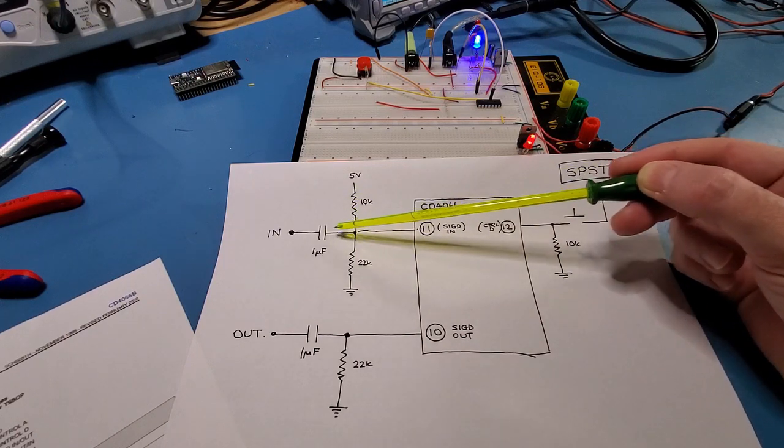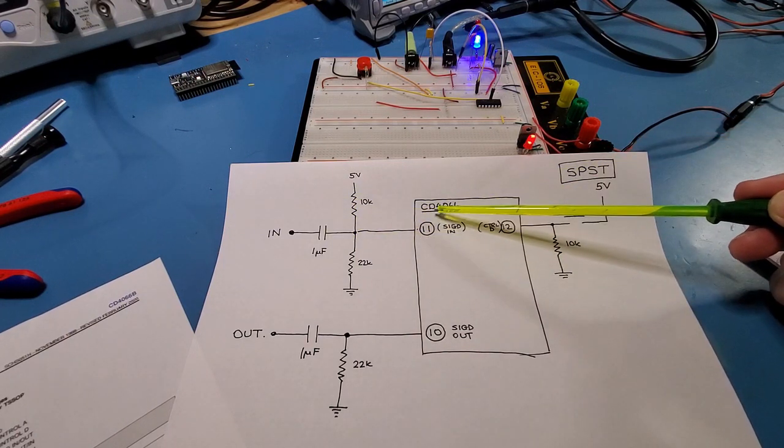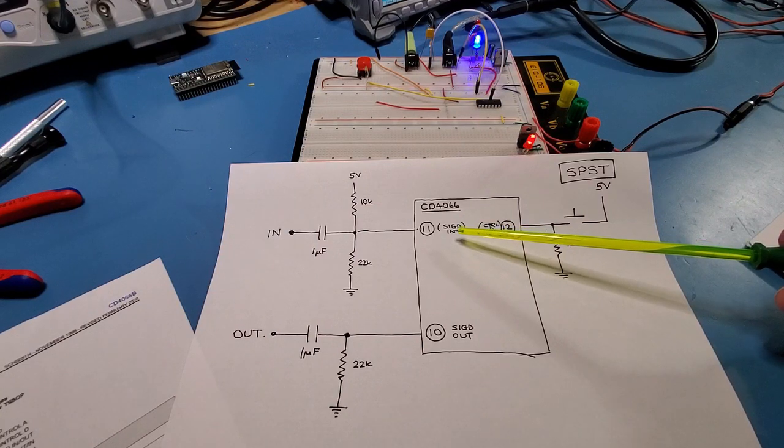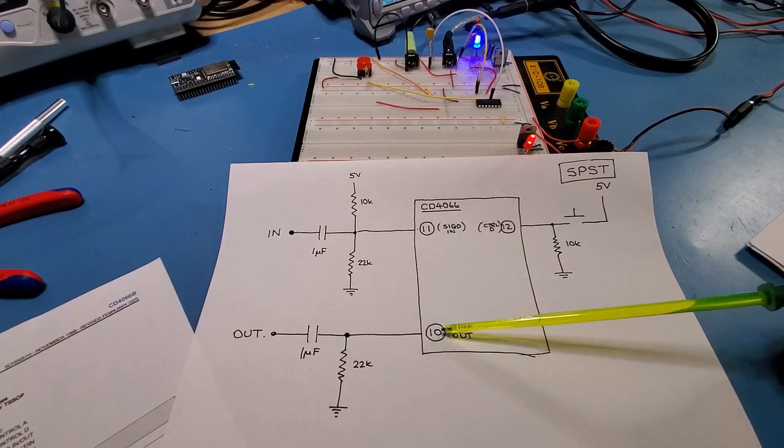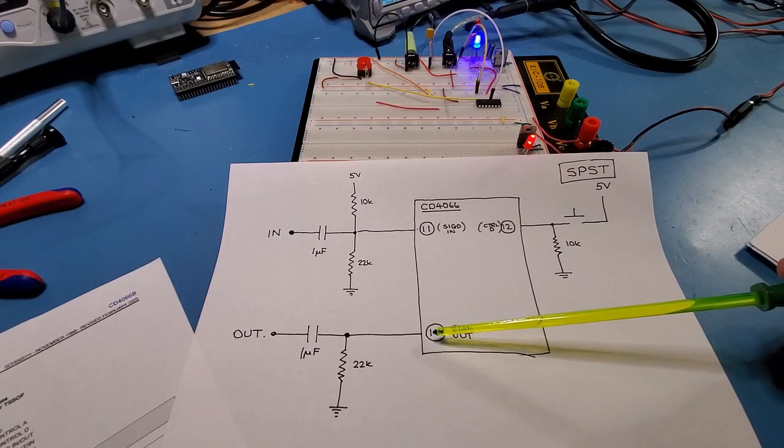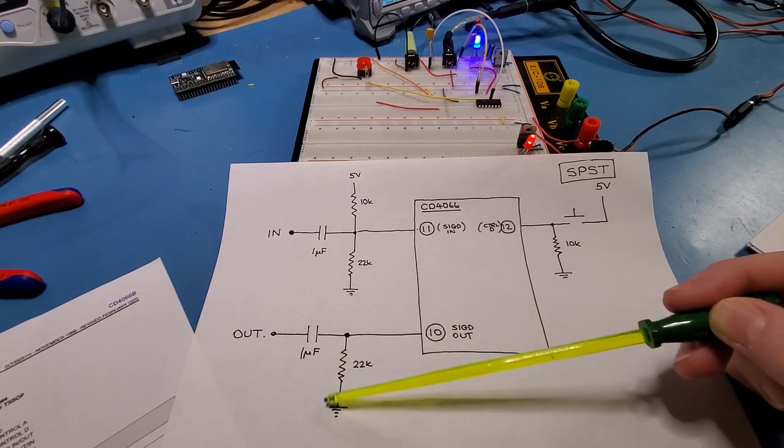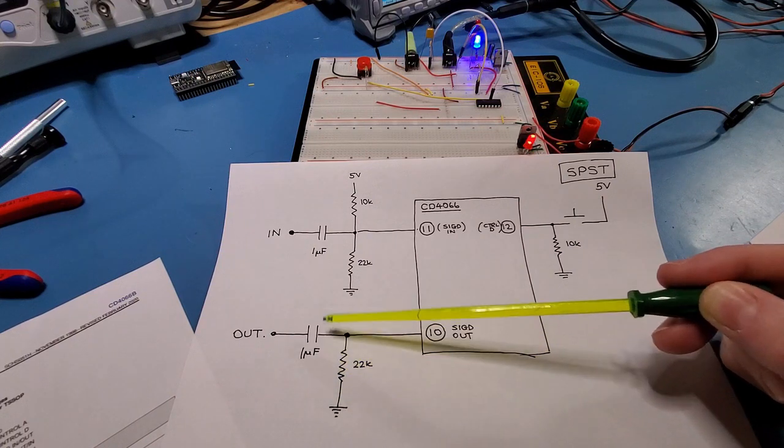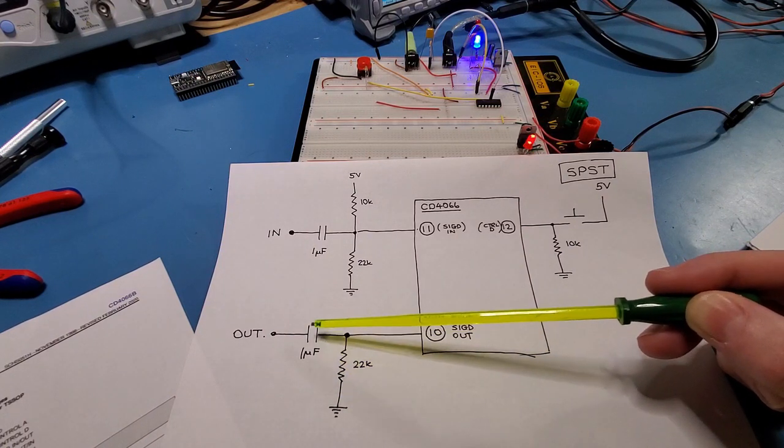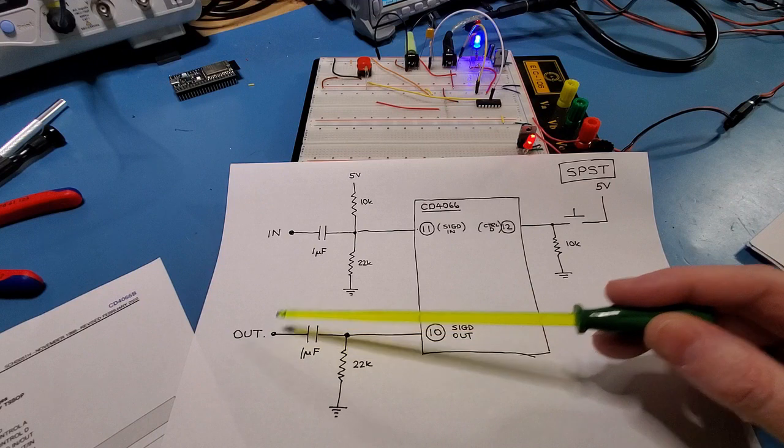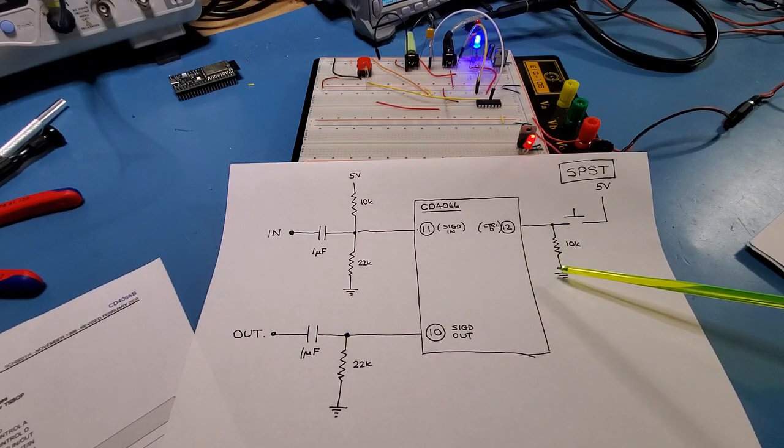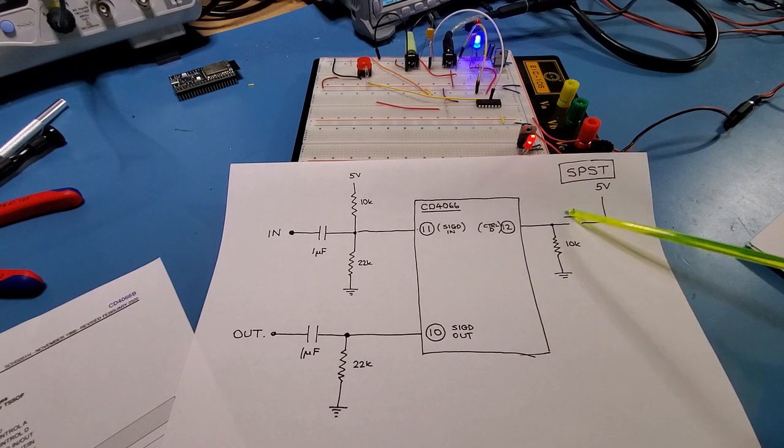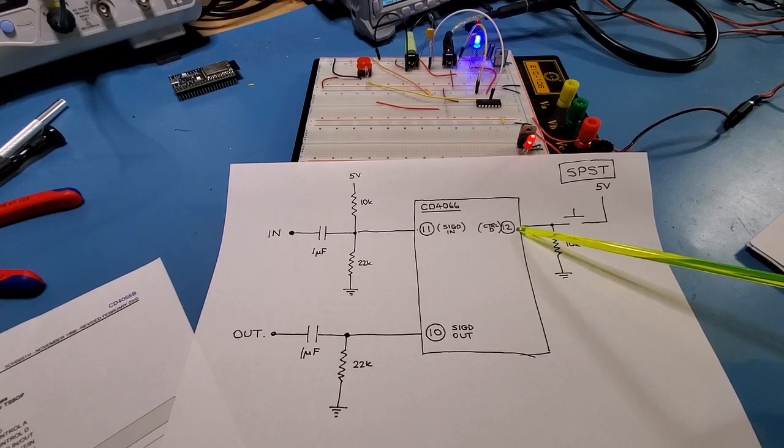So the signal then passes into pin 11 of the CD4066 which is SIGD in and then on the output side I've got pin 10 as the output. There's a 22k resistor right here and then finally a decoupling cap one microfarad to the out. The control signal basically is a simple pulled to ground signal here, a push button here and then when the push button is pressed it connects five volts through to pin 12.